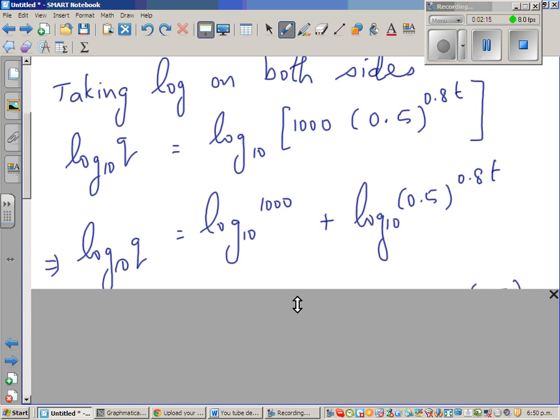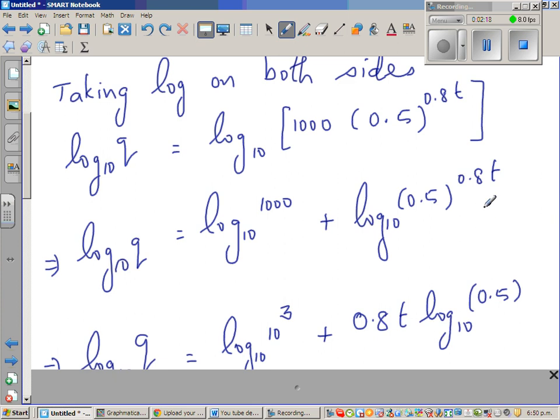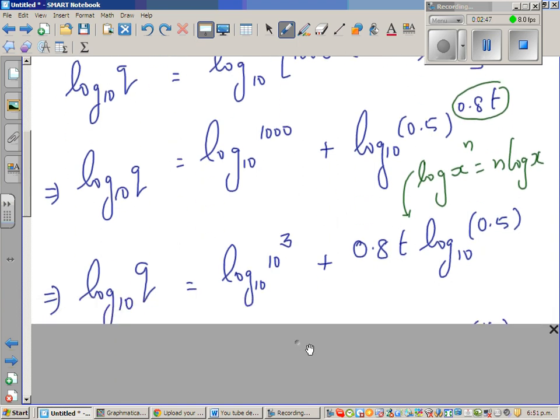So then, here again, we have applied this rule. If you remember this rule, log of x to the power n is n log x. This is one of the rules of log of a power. So applying that rule, we have got this. This power drops down. So that's 0.8 times log of 0.5 to the base 10. This is simple.